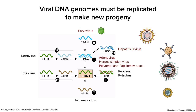Remember that the retroviruses ultimately convert their plus-strand RNA genome into a double-stranded DNA, which gets integrated into the cell. While it's there, it duplicates along with the cell. So the way that DNA replicates in the cell is how retroviruses replicate their genomes. In a separate lecture, we'll talk about reverse transcription, which is quite an interesting process in itself.